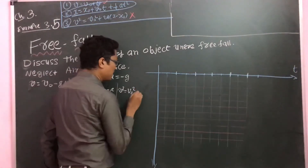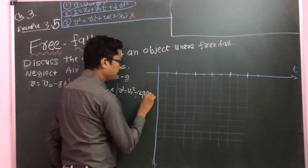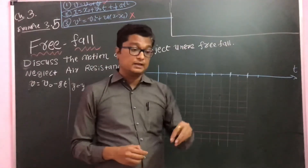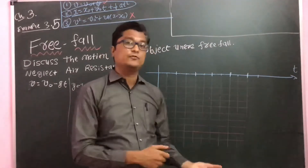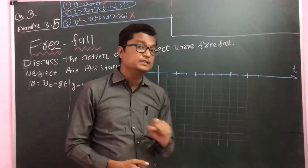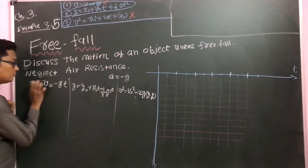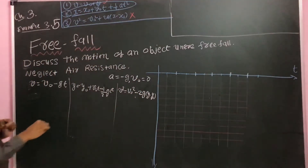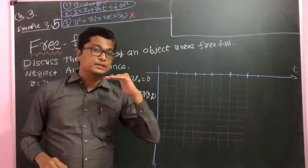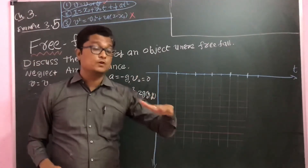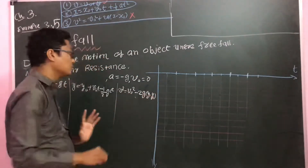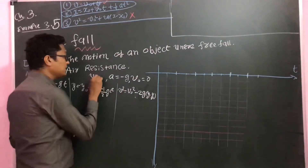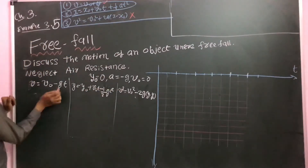So the third equation is v² equals v₀² minus 2g(y - y₀). Now, if the object is falling, we consider that its initial velocity when it just starts falling is zero — v₀ equals zero. Another thing is the height from which the object is falling, that is the initial position y₀, which we are also taking as zero.